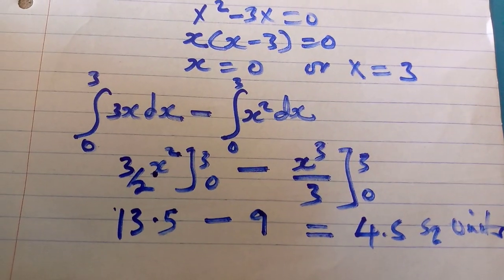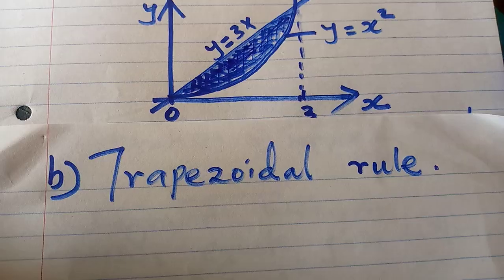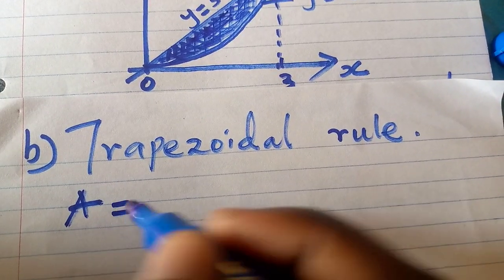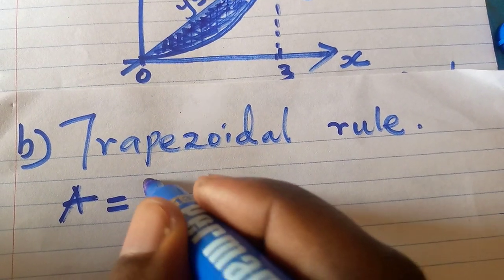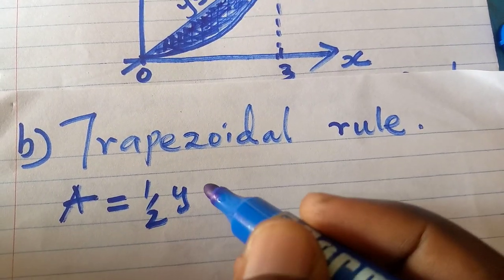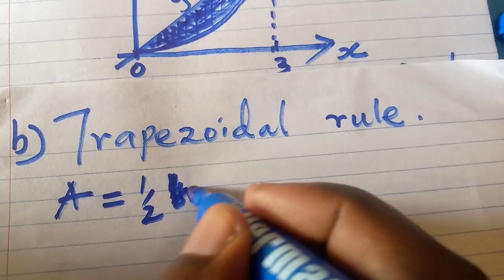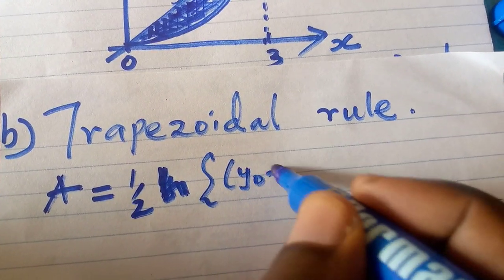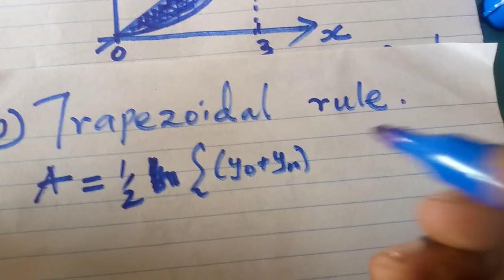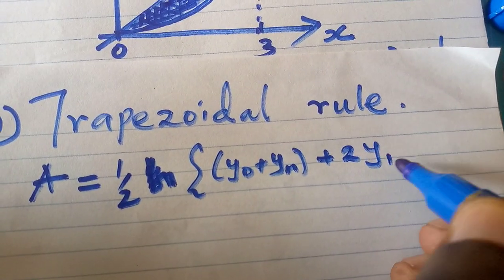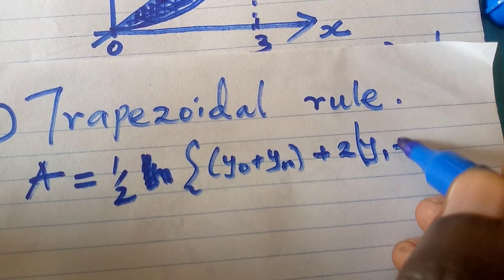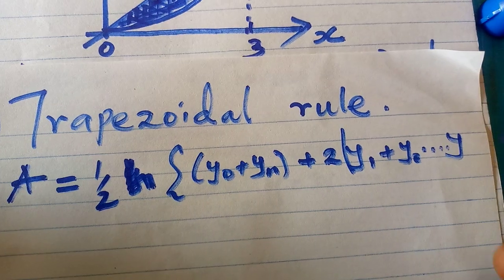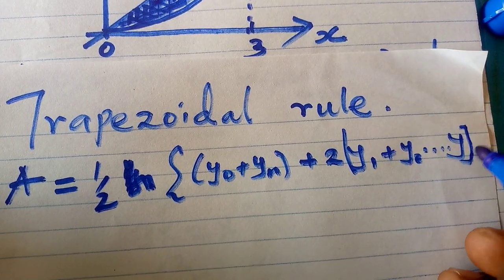So the trapezoidal rule formula: A equals one-half h, bracket y0 plus yn plus 2 times y1, y2, and so on.